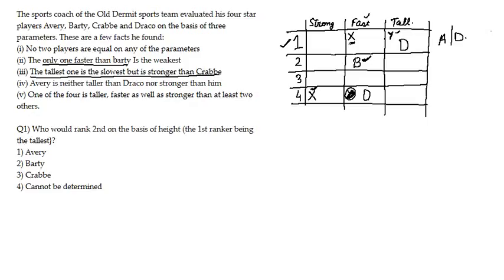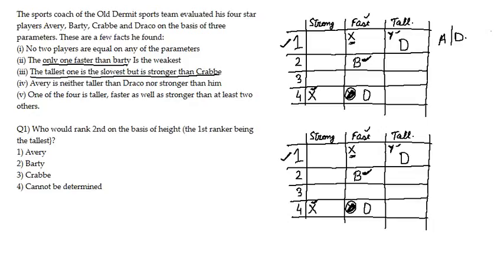For X — the person faster than Bharti and also the weakest — there are two possible candidates: A or C. So let's make two cases. In Case 1, X is A, so A is at rank 1 in speed and C fills the remaining position. In Case 2, X is C, so C is at rank 1 in speed and A fills the remaining position.